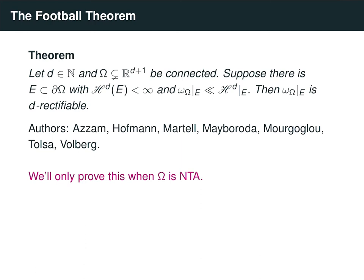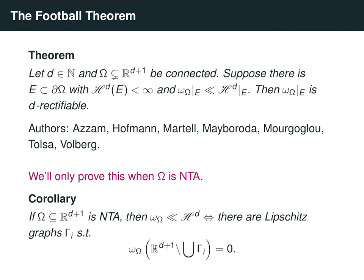In the next video, we'll prove this theorem in the case when omega is an NTA domain, which simplifies many arguments modulo a couple of black-box results. Combining this result with Wu's theorem gives a characterization analogous to the Macmillan-Pomeranke results in the plane: for an NTA domain, harmonic measure is absolutely continuous on the boundary if and only if there are Lipschitz graphs covering almost all of the harmonic measure omega. Note this is different from asserting the boundary is rectifiable or can be covered up to Hausdorff measure zero by Lipschitz graphs.